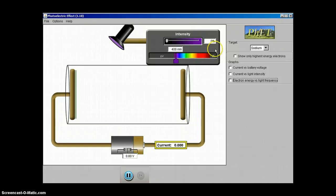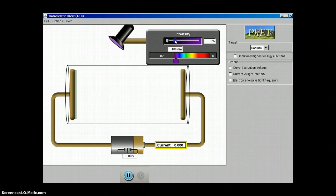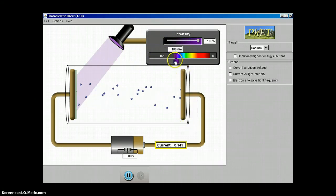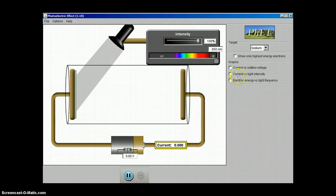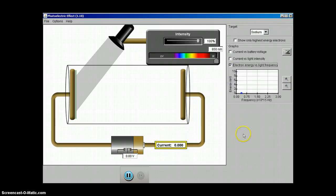We're going to start with the simulation here. There are various parameters we're going to set. Turn the intensity of the light all the way up to 100 percent, turn the frequency all the way down into infrared. This should say sodium, the battery should read zero volts, and we're going to activate this third graph.